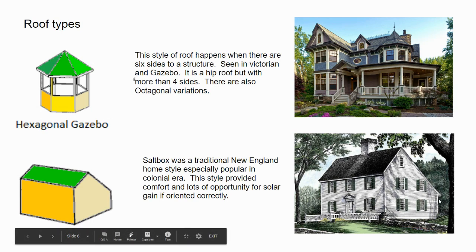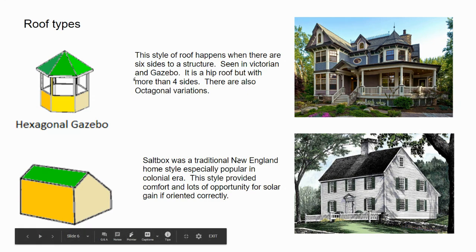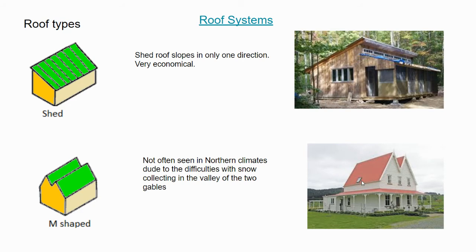Having a back wall that's much lower reduces the amount of space that needs to be heated in winter. It's called a saltbox because in the old days, dry goods like salt were sold in boxes that looked very similar to this shape — you'd open the lid and scoop out what you needed, rather than buying pre-packaged bags.